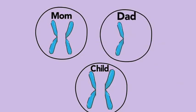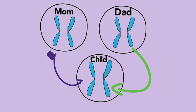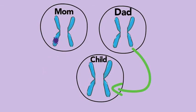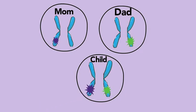You inherit two copies of each gene, one from mom and one from dad. In the cases of disease inheritance, a mutation or a disease-causing change in the DNA can be from mom's copy, dad's copy, both copies, or neither.